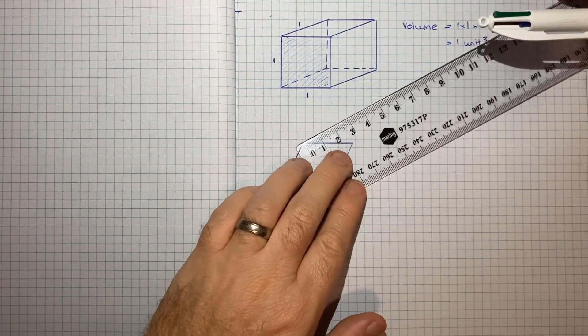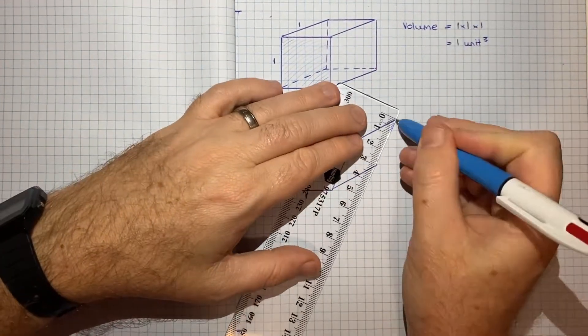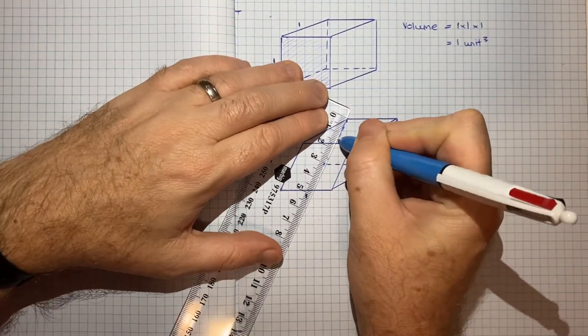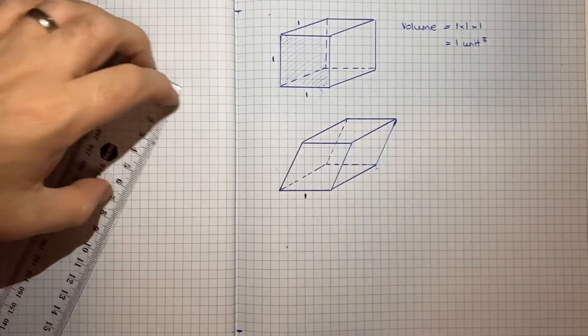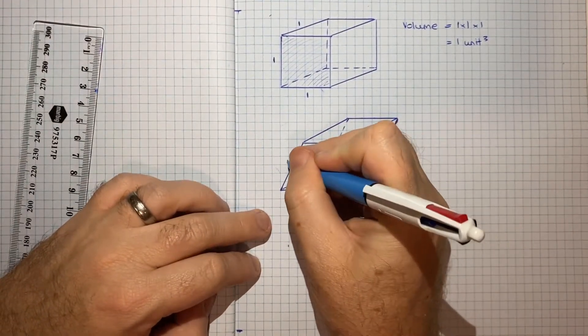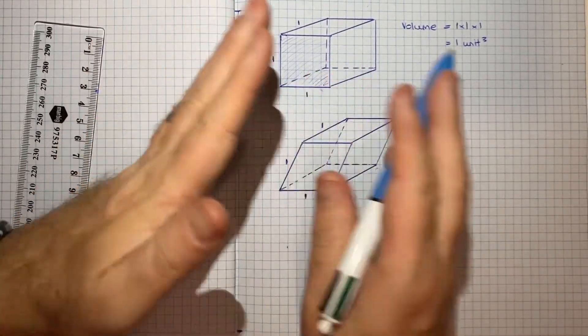And now we'll go... Okay, so here's our kind of cube again. Same dimensions, but it's slanted.